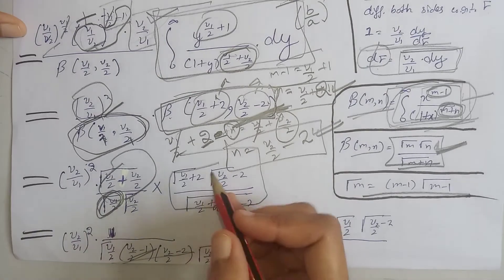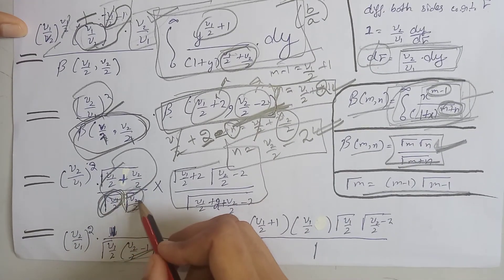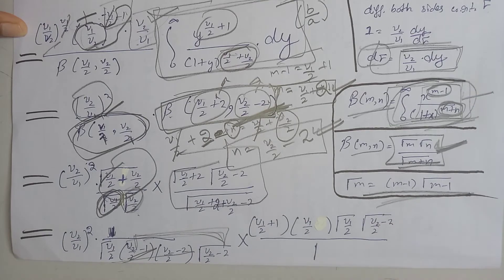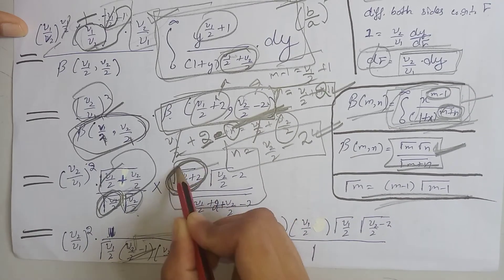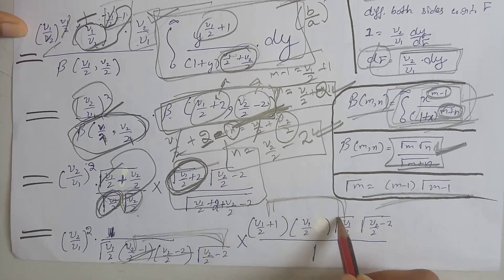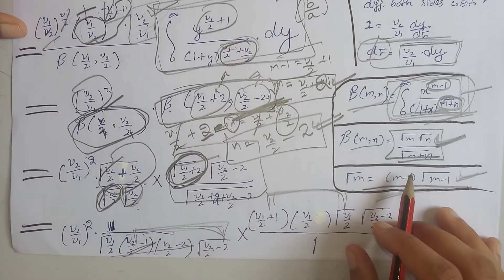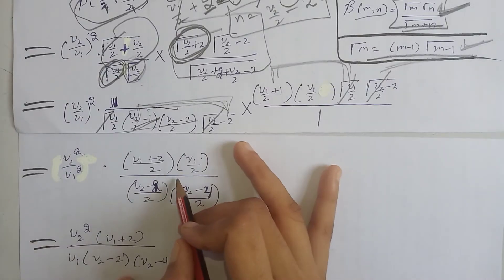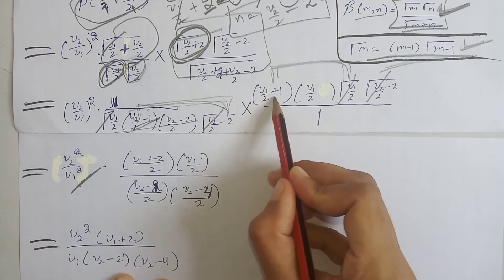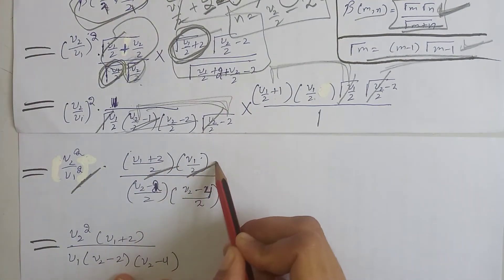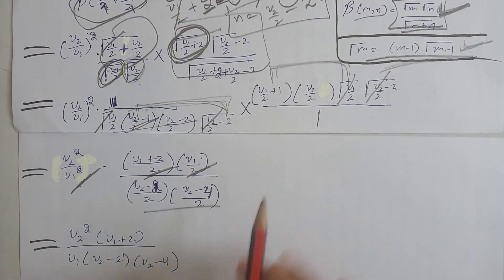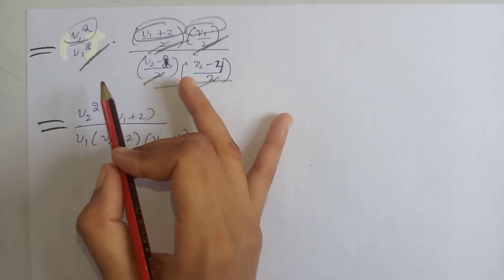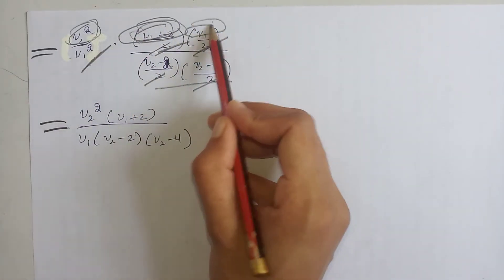We expand Γ(ν₂/2) twice using the identity Γ(x+1) = x·Γ(x), as required by our values of n. Similarly, we expand the numerator gamma functions two times using the same formula. We expand these terms specifically so that cancellations can occur: this term cancels with this, and this term cancels with this.